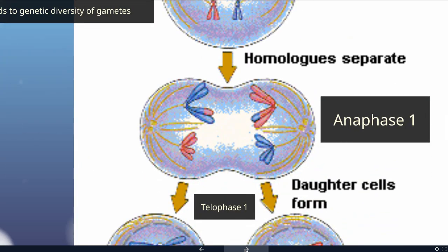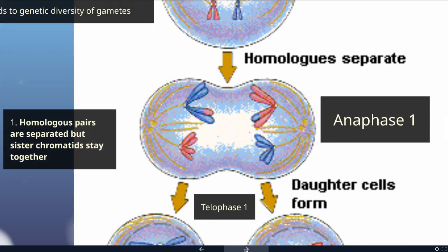In anaphase I, homologous pairs are separated by the spindle fibers, but notice the sister chromatids still stay together. This is one of the key steps in meiosis that is very different from mitosis.